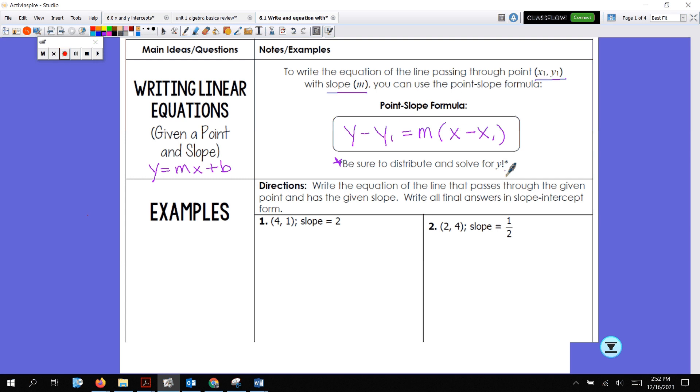Okay, so what we're going to do with example one, we're going to write the equation of a line that passes through the given point and has the given slope. We're going to write all our answers in slope-intercept form, which instead is y equals mx plus b.